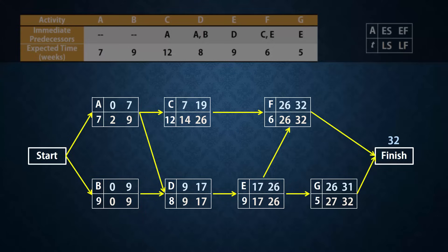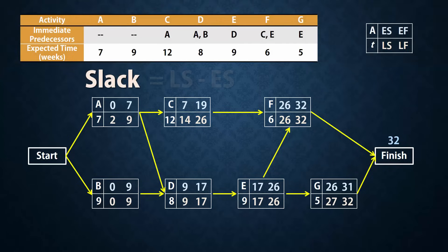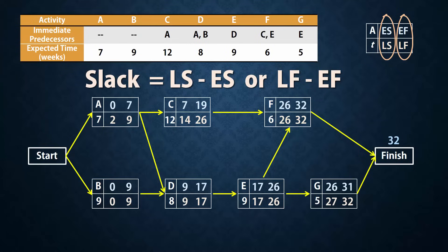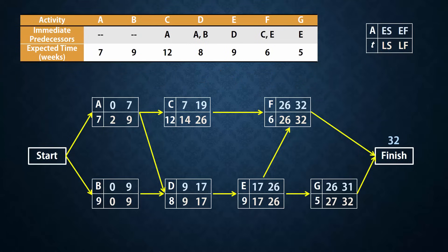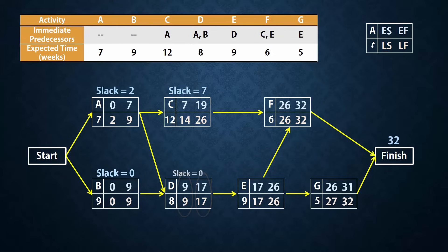Slack for an activity is defined as how long the activity can be delayed without extending the project's completion time. It is calculated as LS minus ES, or LF minus EF. So the slack for A will be 2 minus 0, or 9 minus 7, which will be 2. The slack for B will be 0. For C, it will be 7. For D, 0. For E, 0. For F, 0. And for G, 1.